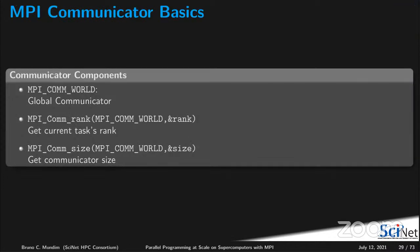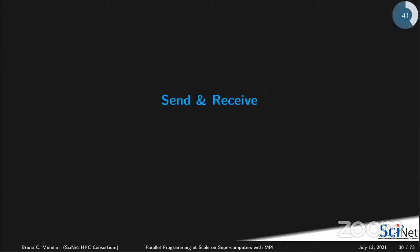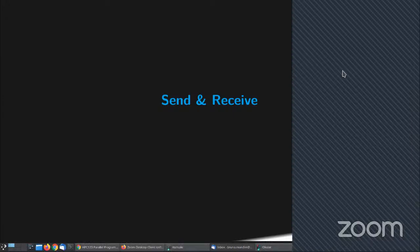To summarize the main components: the global communicator MPI_COMM_WORLD is the default, MPI_Comm_rank gets the current task's rank, and MPI_Comm_size gives the communicator size. We have two main concepts worth summarizing: the communicator that groups tasks and tracks size, and the messages — what you need to send and receive.